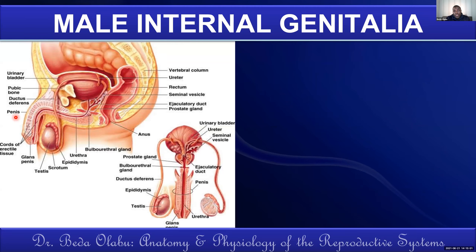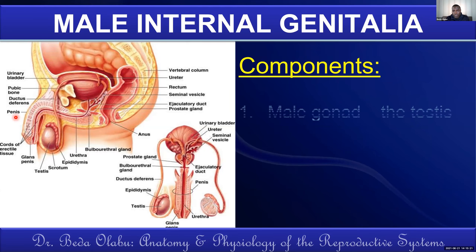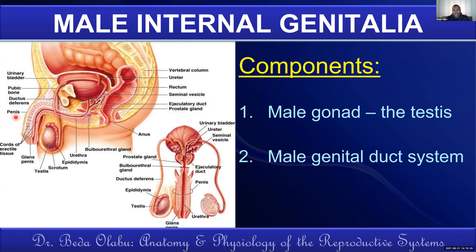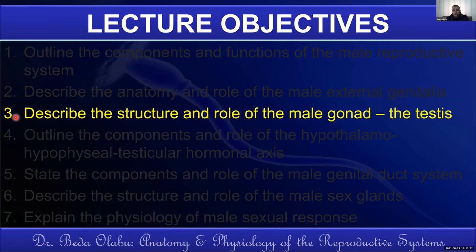The male reproductive system consists of external genitalia and internal genitalia. For internal genitalia, the components are divided into three categories: the male gonad (the testis), the male genital duct system — the path followed by semen from the testis to the exterior — and the male sex glands, responsible for producing semen. Now let's talk about the male gonad, the testis.